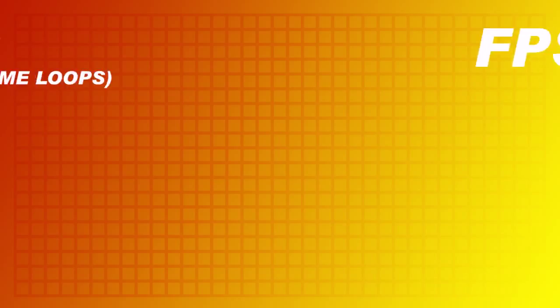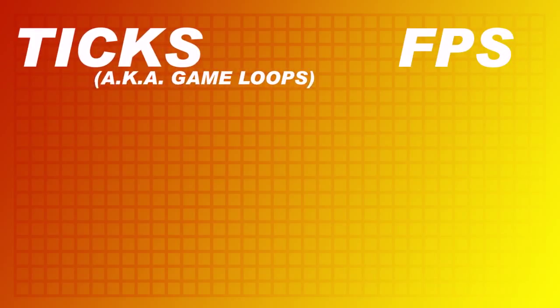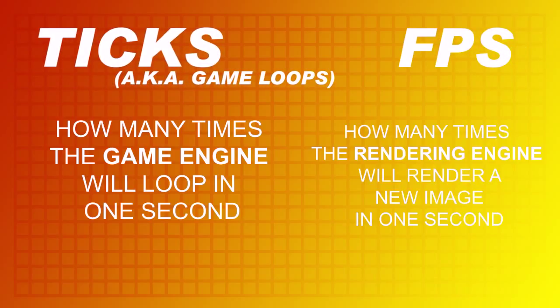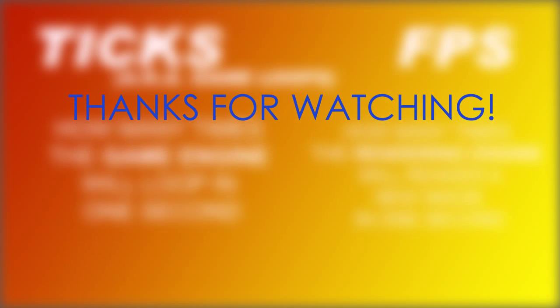But the topic of this video was the difference between ticks and FPS. So what did we learn? Ticks are how many times the game engine will loop and test for changes. Frames per second, or FPS, is how many times the rendering engine will render a new image per second. Thanks for watching.